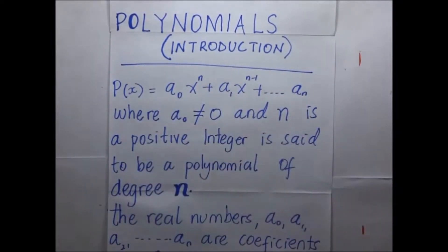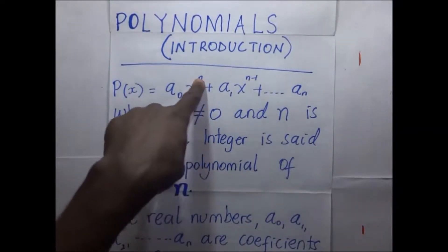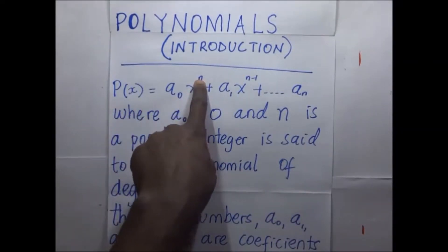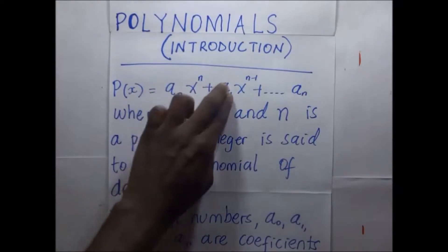Now, this x is an unknown to the power n. The n can be any number: one, two, three, whatever. These values of a_n, a_1, and so forth are simply coefficients of these unknowns.